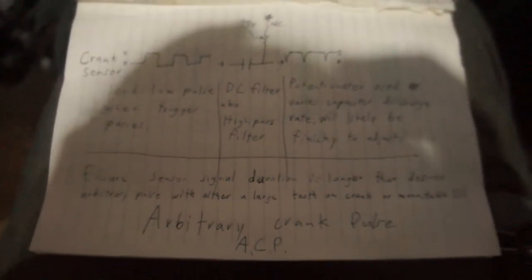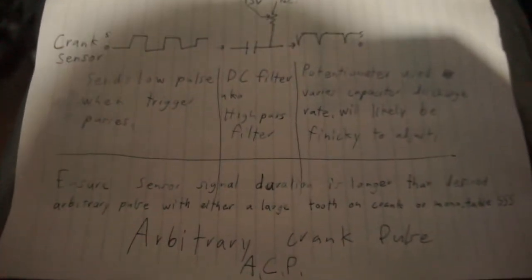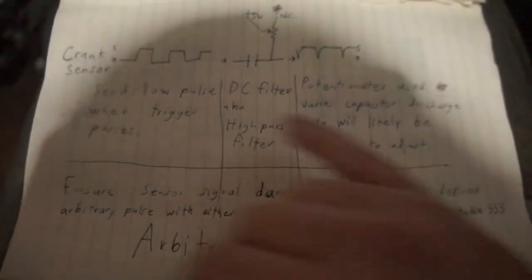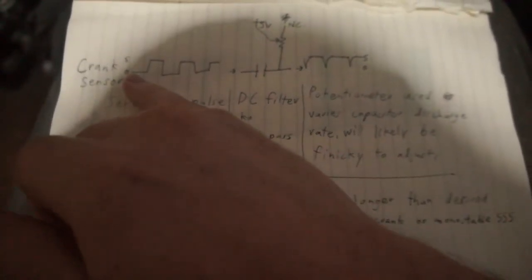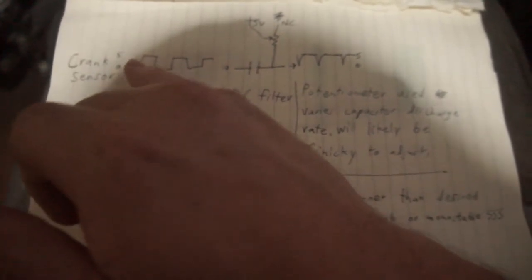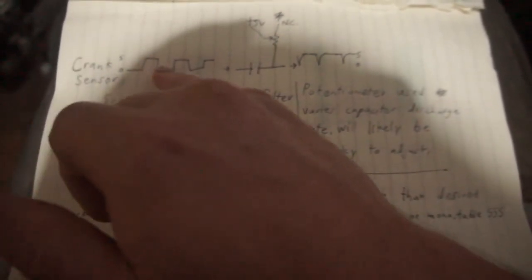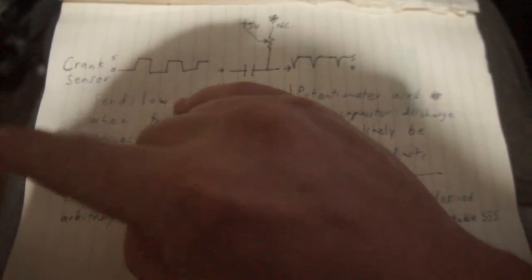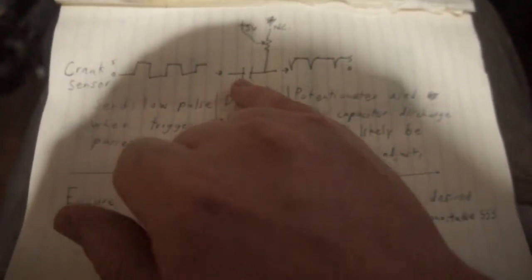Alright, I think it's about this simple. Crank sensor normally held at 5 volts or 12 volts - I don't know what the one I got is - but it sends a ground pulse every time the wheel passes it. DC filter.